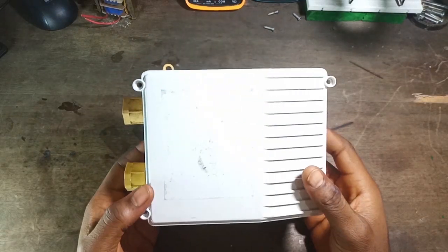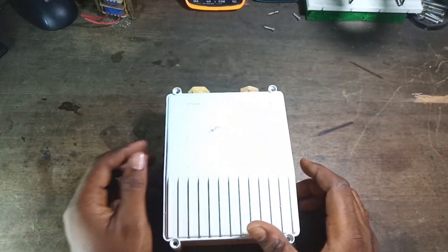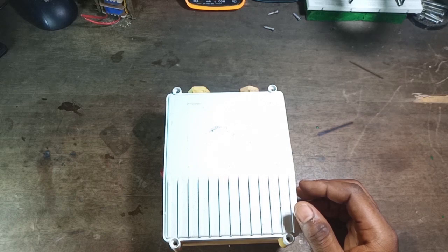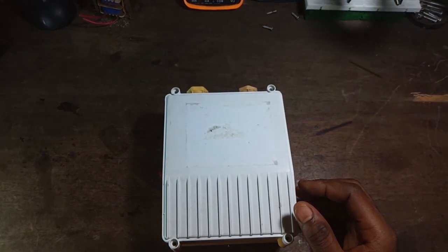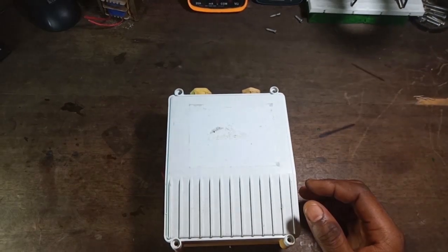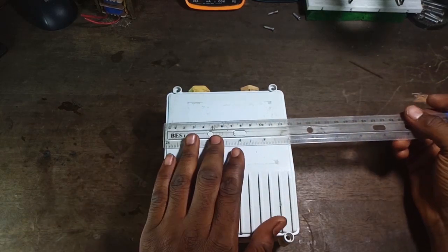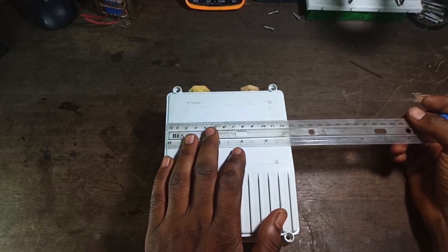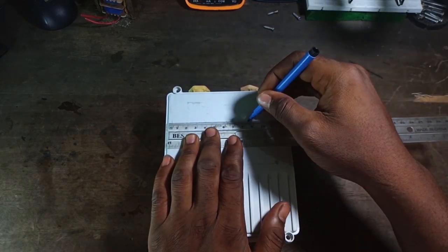These doors here will serve as housing for the system. First, I need to mark out the dimension for the voltmeter.